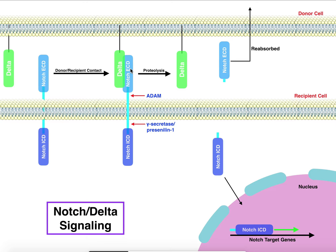When the Notch extracellular domain binds to Delta, it triggers conformational changes that span from the extracellular domain through the transmembrane domain and into the intracellular domain. The intracellular domain also changes conformation. When you have all these conformational changes, it stimulates some enzymes — some on the extracellular side of the recipient cell, others on its intracellular side — and they induce proteolysis, clipping the extracellular domain and the intracellular domain.